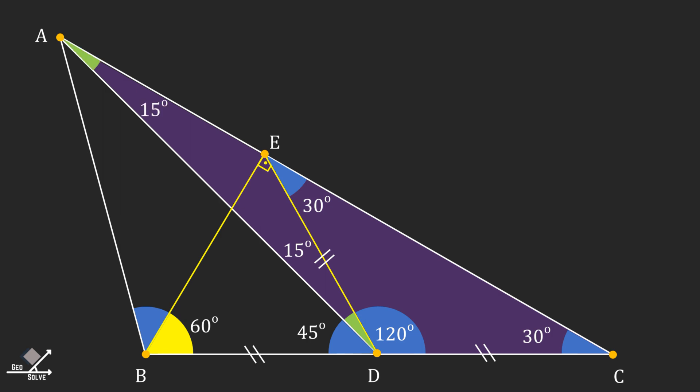Since internal angles of the triangle add up to 180 degrees, angle DEC can be found as 15 degrees.